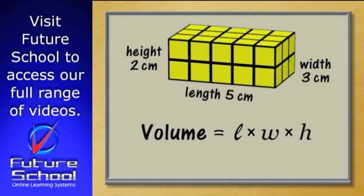Length times width times height will give you the volume of any rectangular prism. And once you enter the third dimension, your measurements have to be in cubic units like these cubic centimeters.